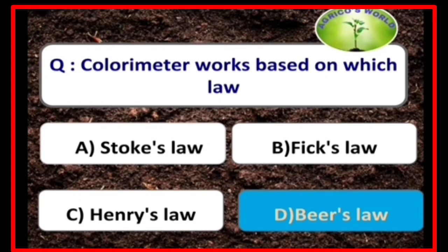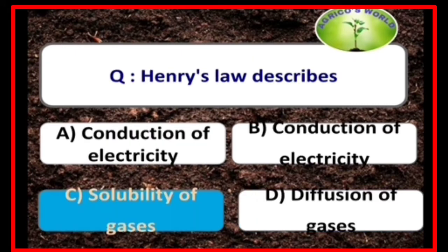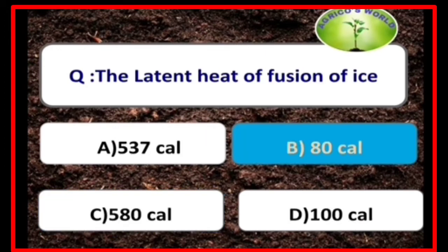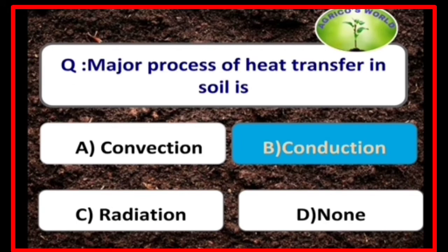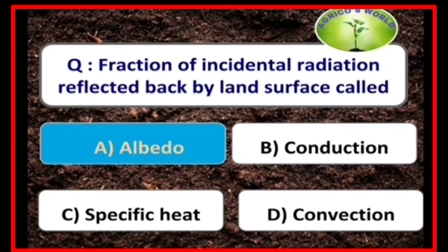Colorimeter works based on Beer's law. Henry's law describes the solubility of gases. The latent heat of fusion of ice is 80 calories. The major process of heat transfer in soil is conduction.